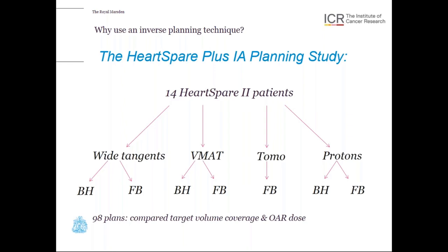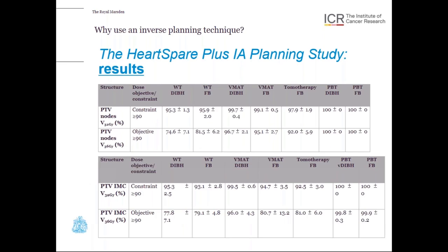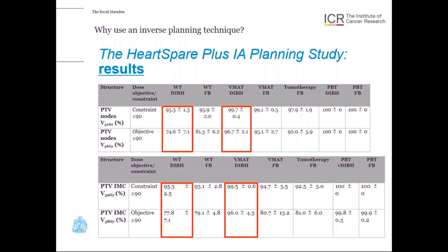So why do we want to use an inverse planning technique? The results of the Heart Spare Plus 1A planning study showed that when only considering linac-based photon techniques in breath hold, there was a significant increase in coverage of the nodal PTVs, including the IMC-PTV. The VMAT in breath hold was achieving over 96% V36 Gy for the PTV nodes, which reduced to under 75% for the wide tangent plans. We had similar results when we just analyzed the IMC-PTVs as well. So if we want to get a good dose to the IMCs, we need some sort of inverse planning technique.